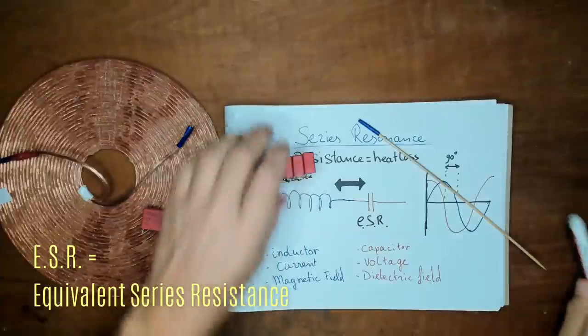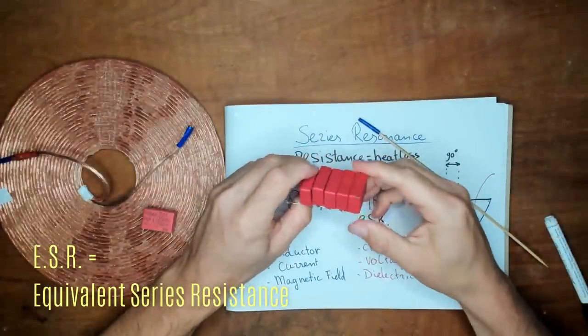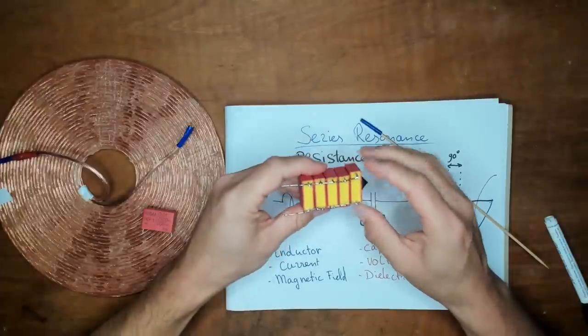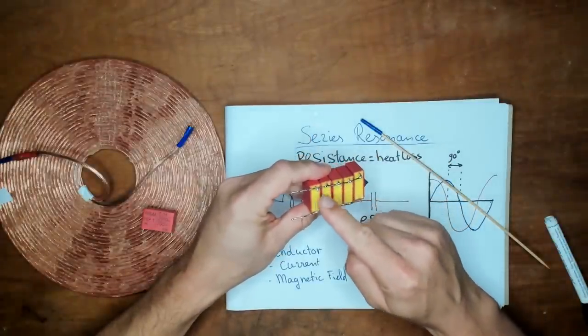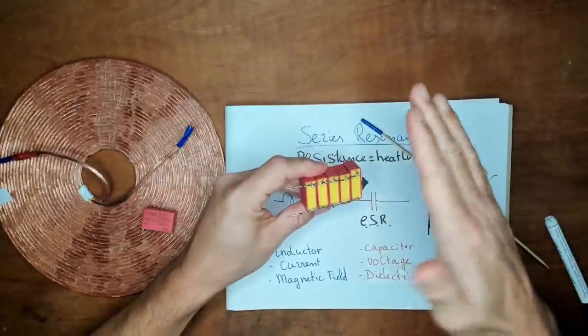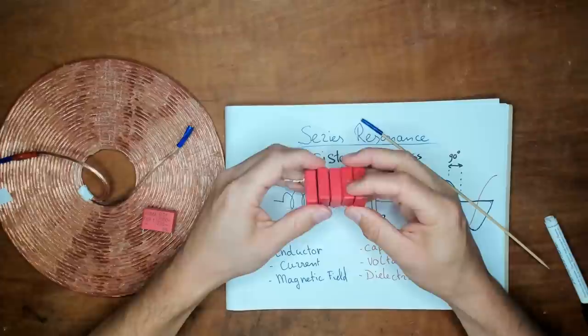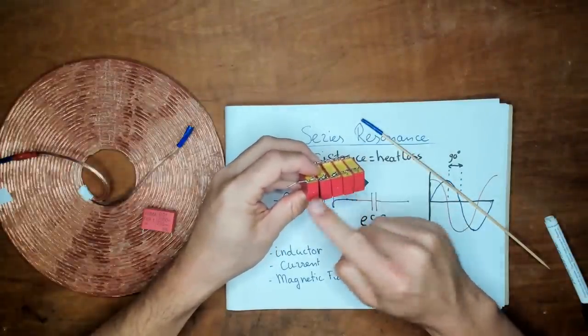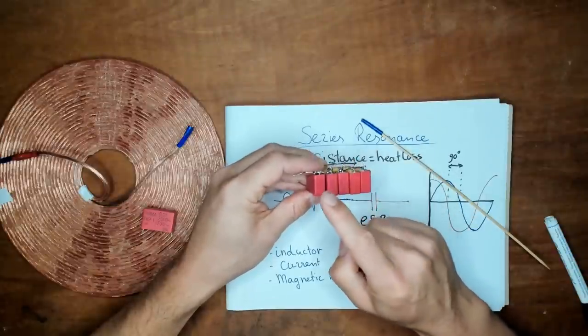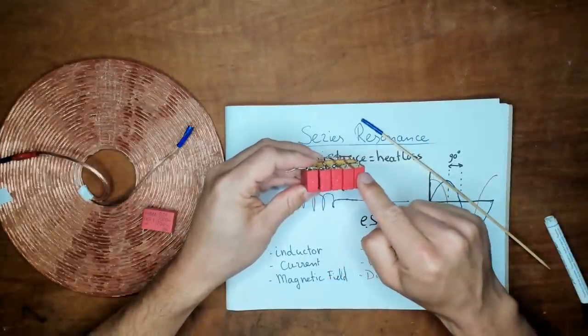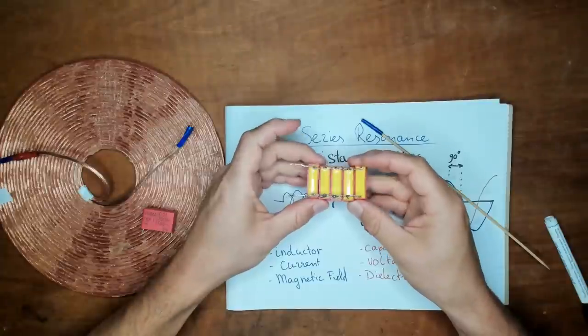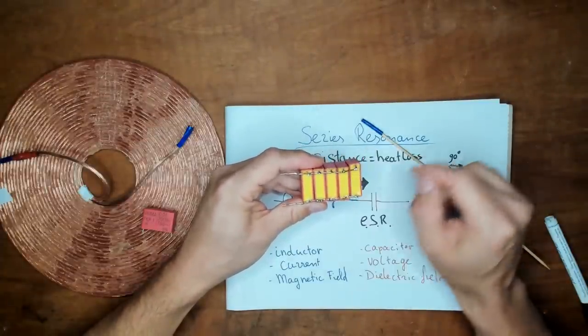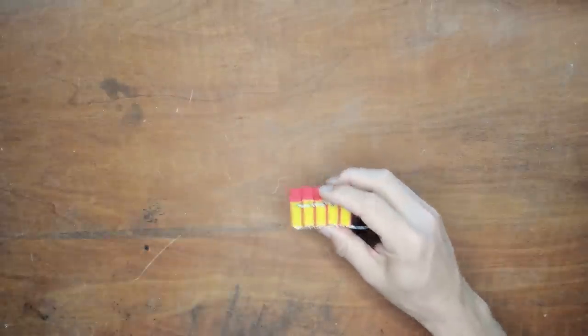A capacitor also has equivalent series resistance, ESR. And you can reduce the resistance of a capacitor by putting them in parallel. What this does is that you basically have the resistance of each capacitor in parallel and therefore it drops down to a much lower value. At the same time the values of the parallel capacitors are added up together. So this is 10 nF and times 5 makes 50 nF. And this way you can tune your circuit really easy because if it's too much you just remove a capacitor.